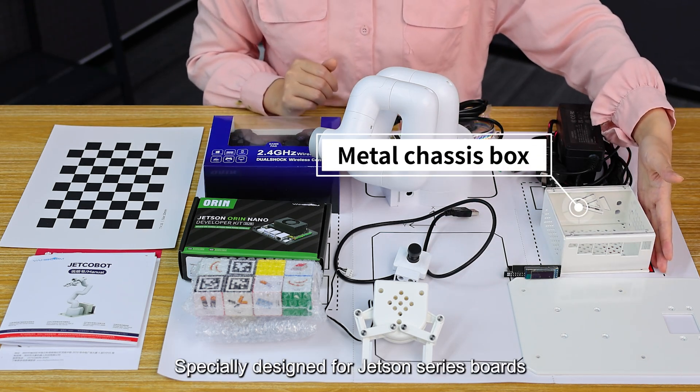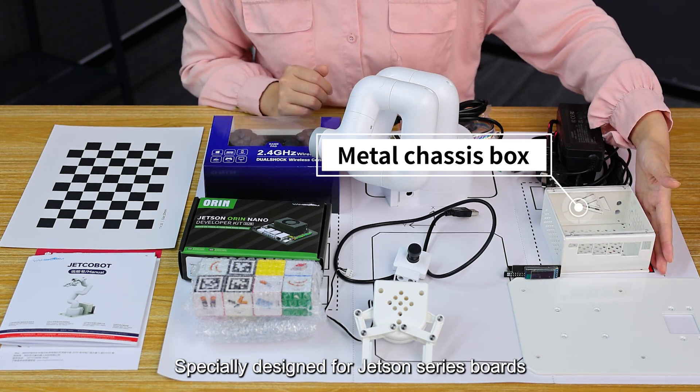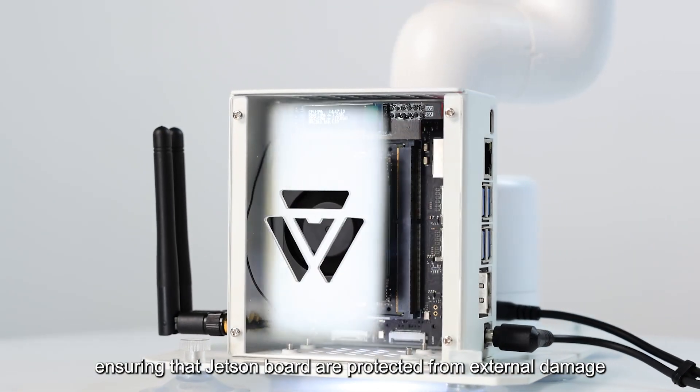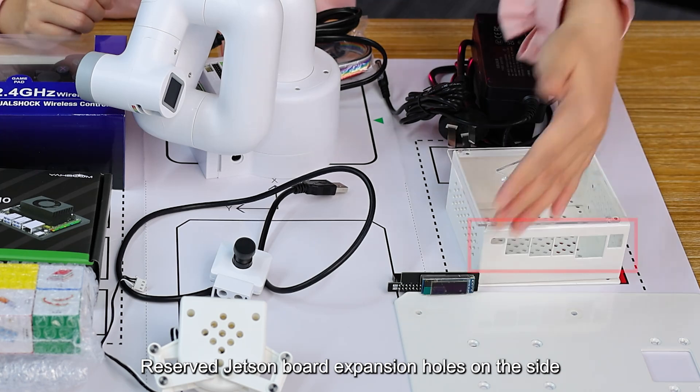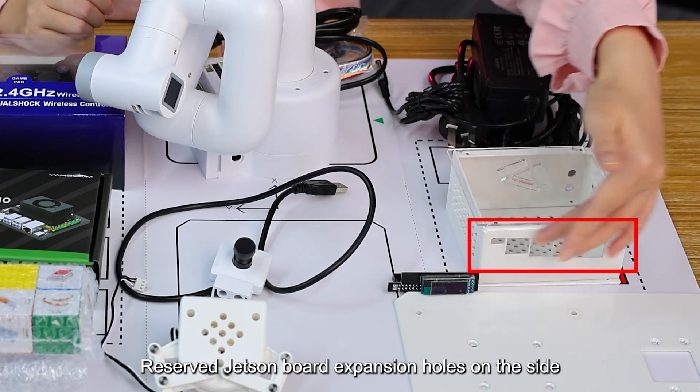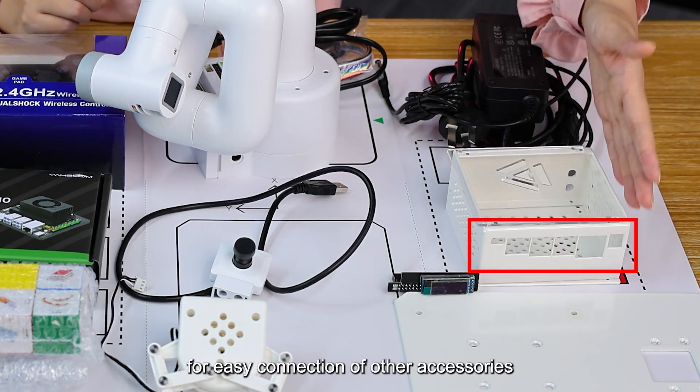This chassis box is specially designed for Jetson series boards, ensuring that Jetson boards are protected from external damage. It reserves Jetson board expansion holes on the side for easy connection of other accessories.